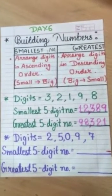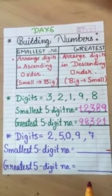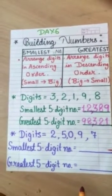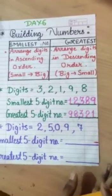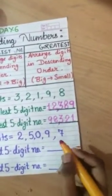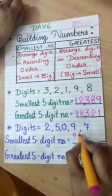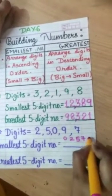Now, our next question which is having some digits like 2, 5, 0, 9, 7. Now, we need to build the smallest and greatest 5 digit number. Let's build it. Let's start it from the smallest one. Let's arrange in ascending order. The first, the smallest number is 0, then 2, 5, 7, 9.